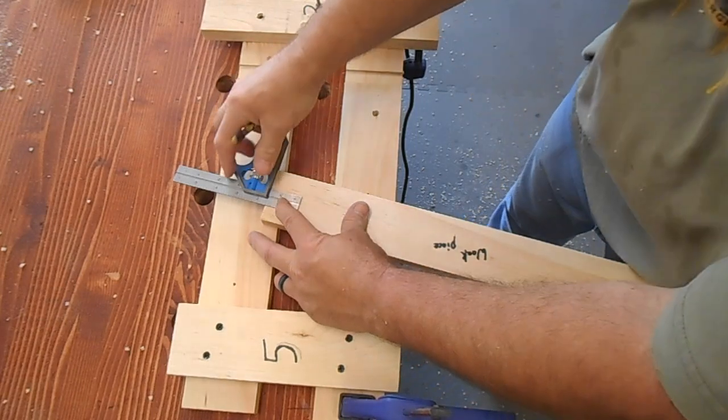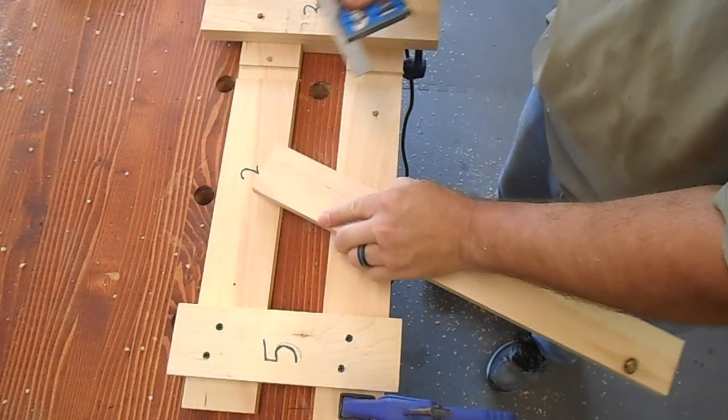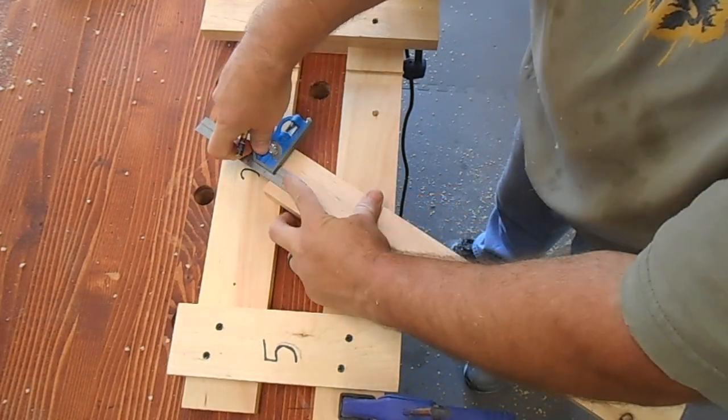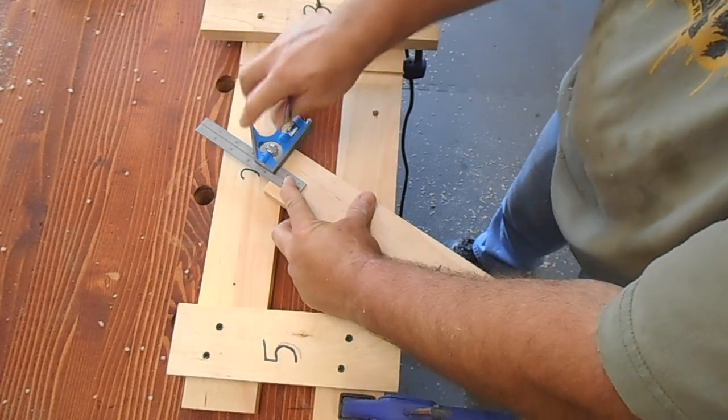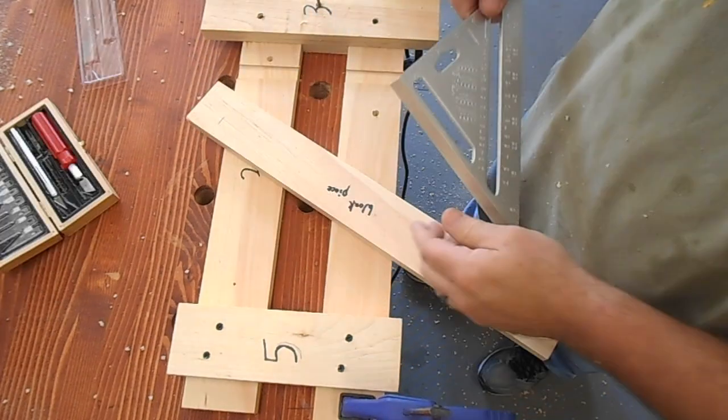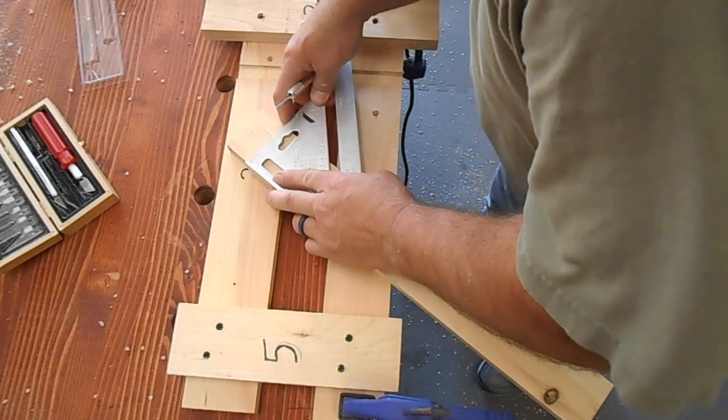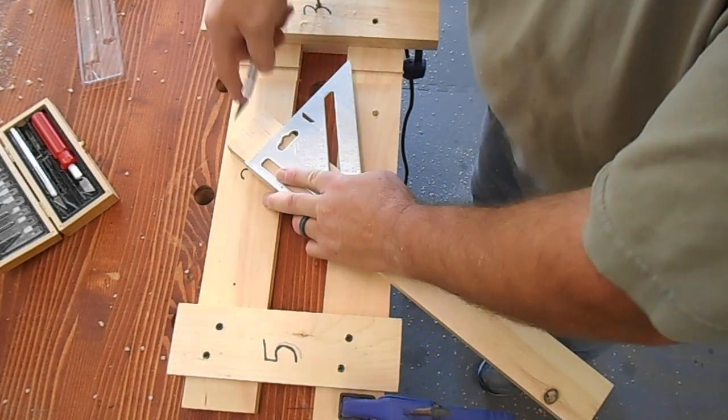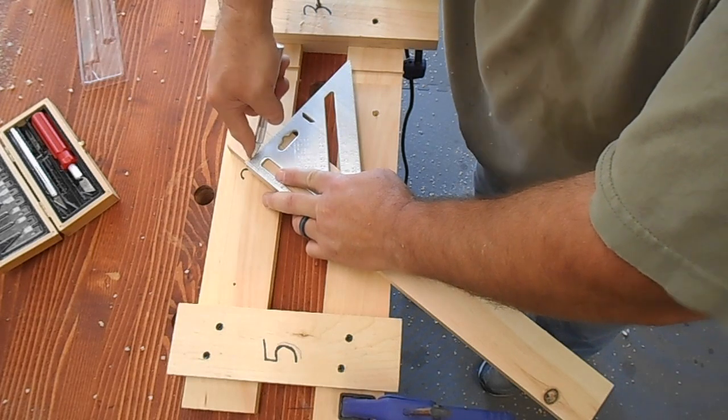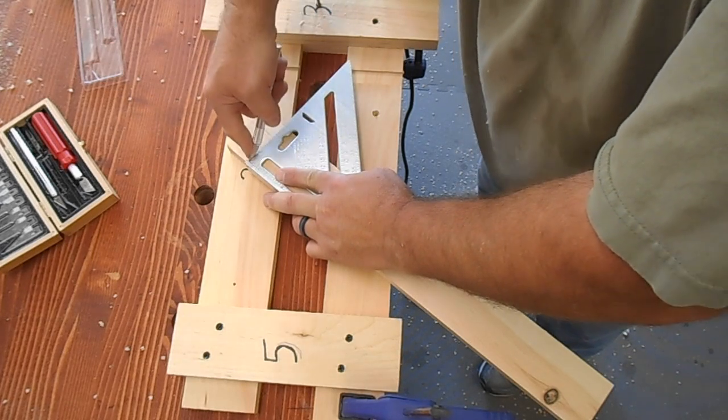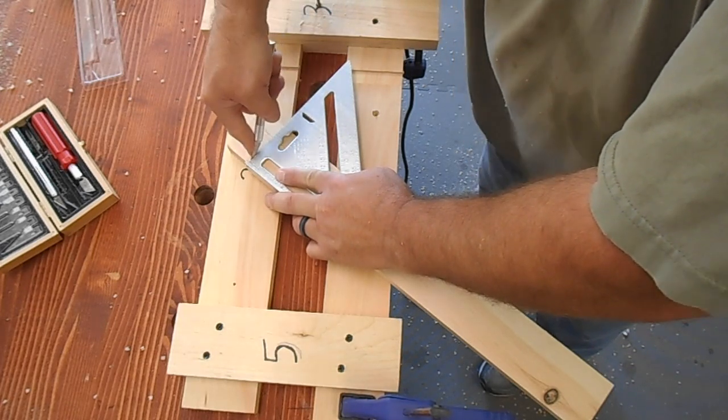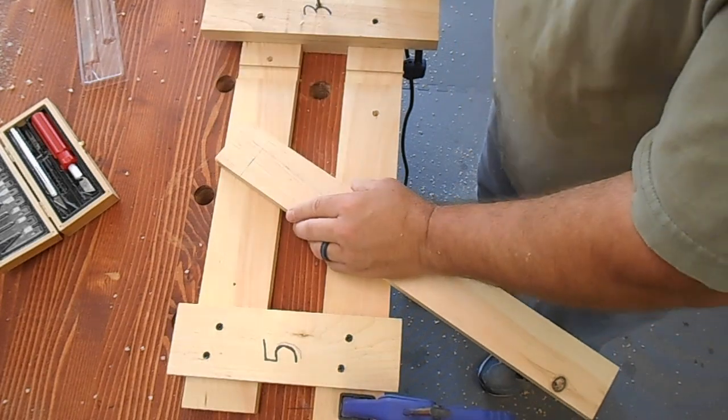Now measure the depth for the length that you want your tenon. I'm marking an inch and a half on this, but this is just an example. And then take a sharp knife. I used an exacto knife. If you've got a marking knife or any type of blade, you want to define that line with a good sharp knife. That way you won't get fuzzies on it. And do this all the way around your workpiece.